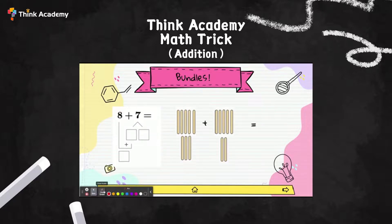It doesn't seem like I have a bundle of 10 here. I have 8+7. How can I get to my bundles of 10? Let's think, 8+7, which number is closer to 10? 8 is closer to 10. But 8 needs to add how much more to get to 10?